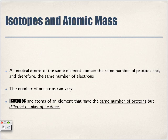All neutral atoms of the same element contain the same number of protons and therefore the same number of electrons, but the number of neutrons can vary. Isotopes are atoms of an element that have the same number of protons but different number of neutrons.